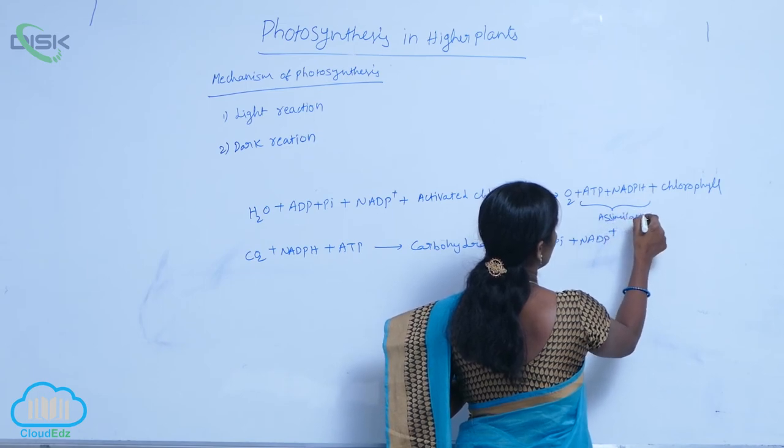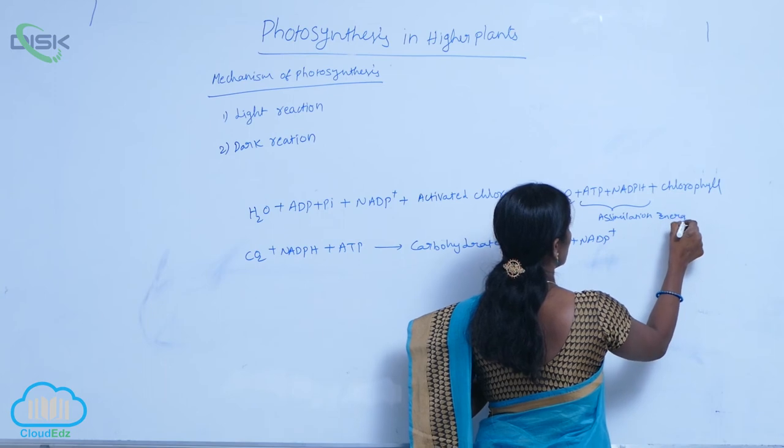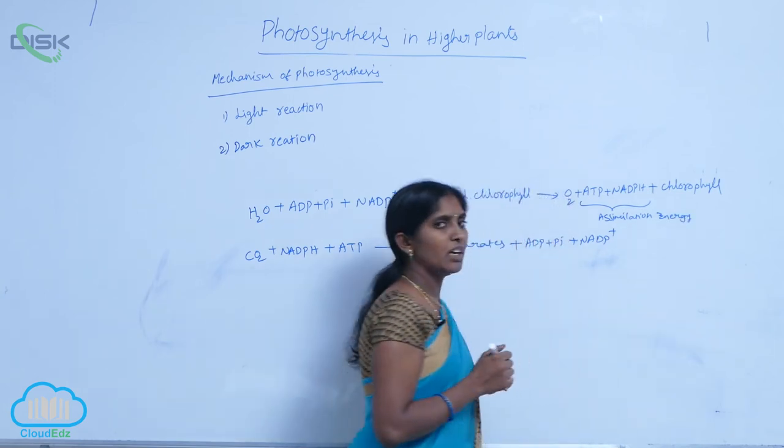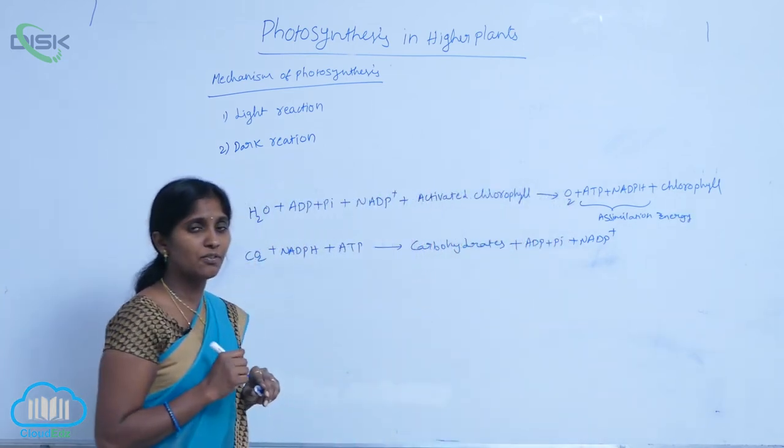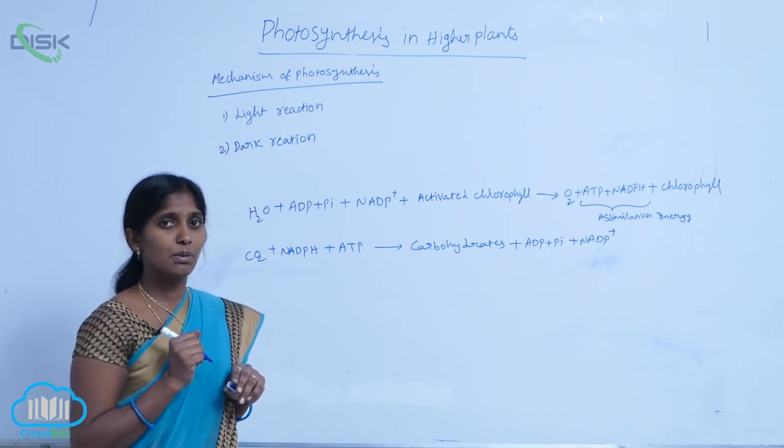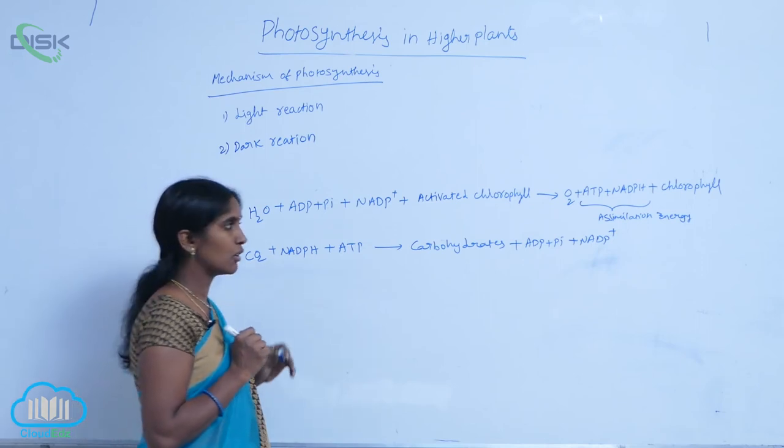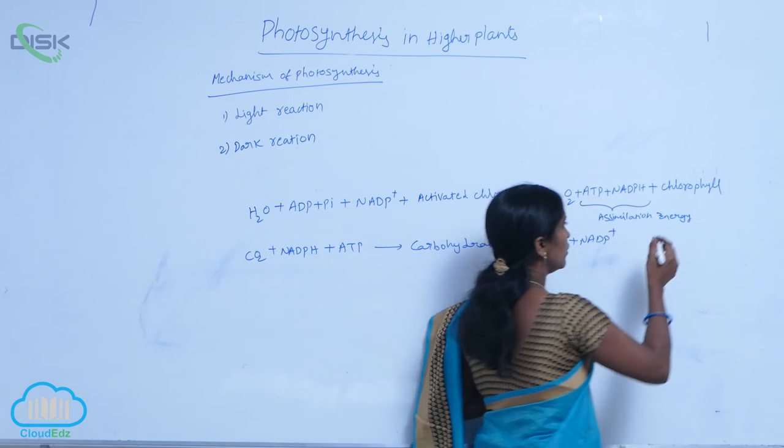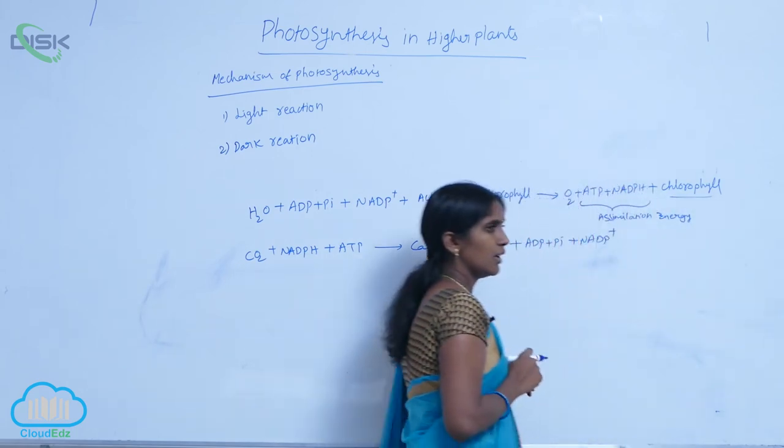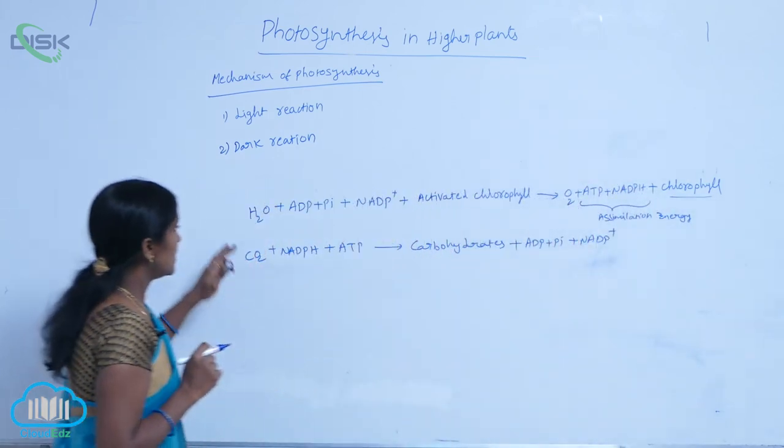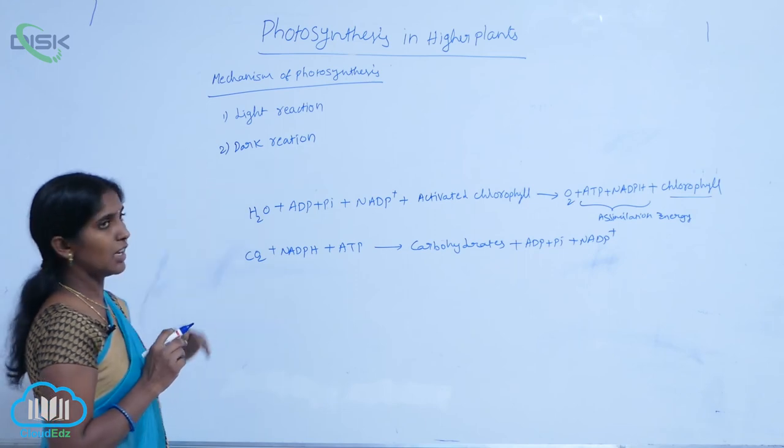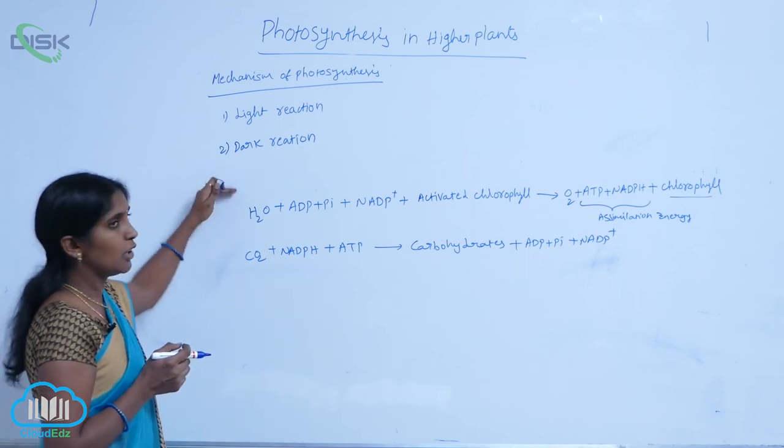The released assimilation energy is utilized in fixation of carbon or assimilation of carbon in the dark phase, and the chlorophyll is left. This is the summary reaction for the light reaction and dark reaction.